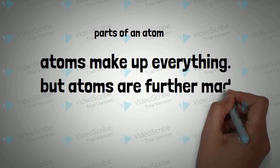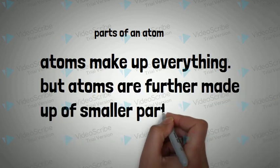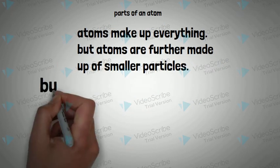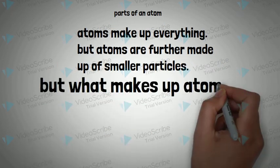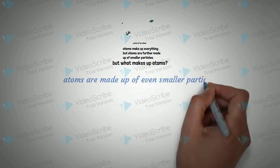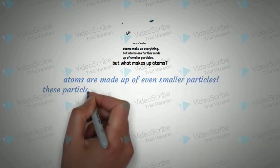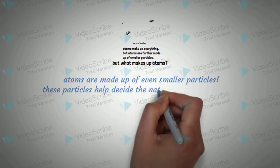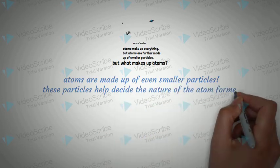But atoms are further made of smaller things. Let's discuss them in this video. What makes up an atom? Atoms are made up of even smaller particles. These particles help decide the nature of the atoms formed.